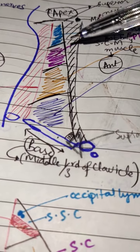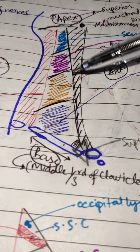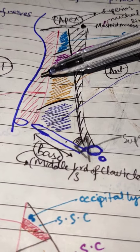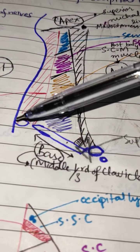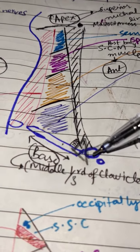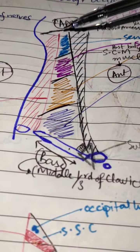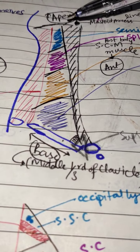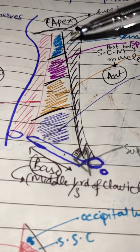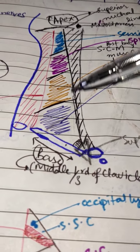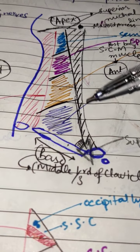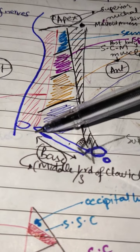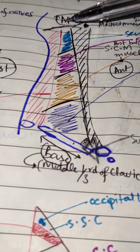The posterior triangle is formed by the posterior border of the sternocleidomastoid muscle. This is the sternocleidomastoid muscle, this is the trapezius muscle, this is the clavicle, and this is the sternum. This is the superior nuchal line where both muscles are attached on the occipital bone. Anteriorly it is formed by the posterior border of the sternocleidomastoid, and posteriorly it is formed by the anterior border of the trapezius muscle.